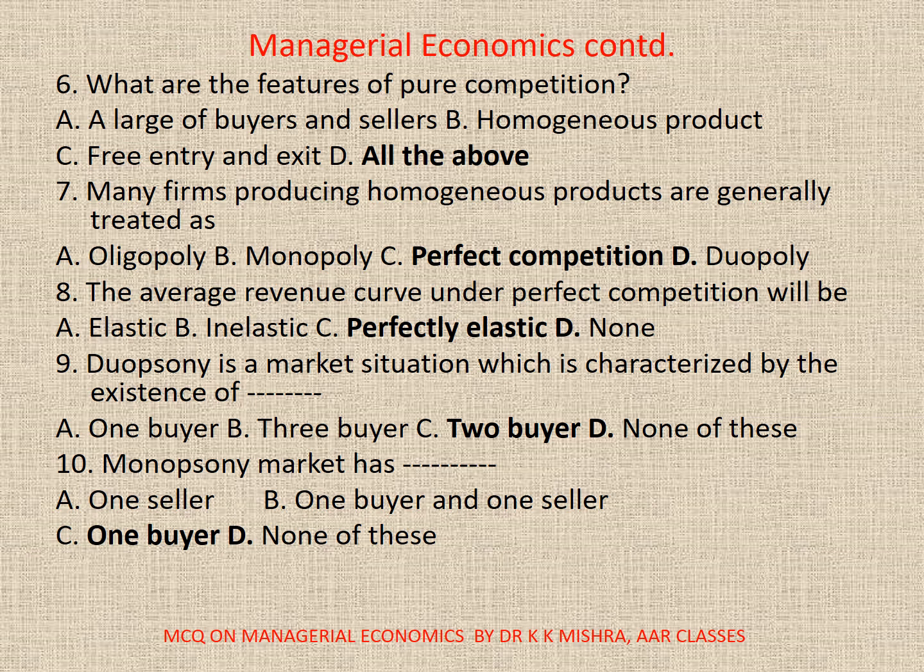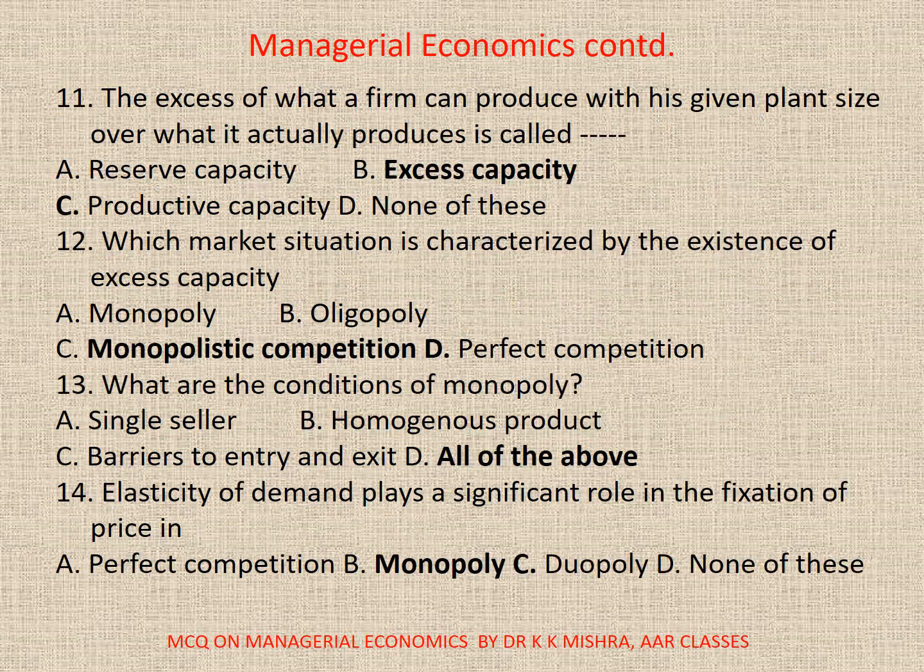10. Monopoly market has: A. One Seller, B. One Buyer and One Seller, C. One Buyer, D. None. Correct option is A. One Seller.